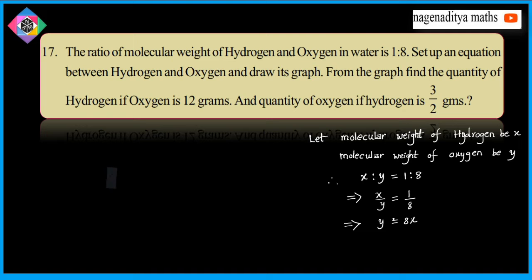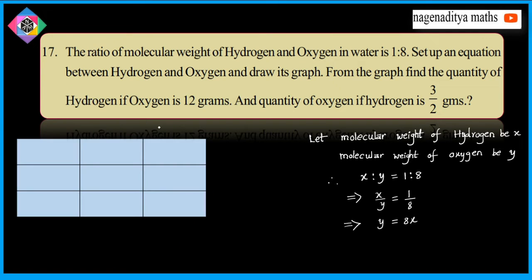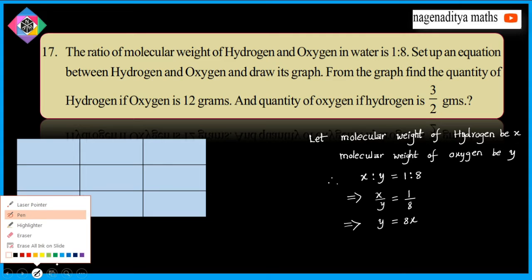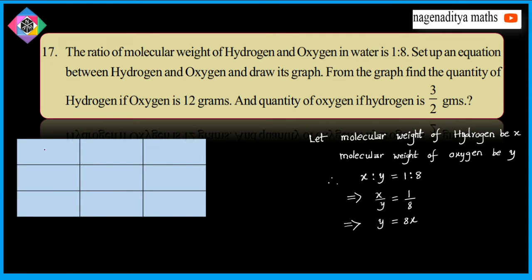To plot y is equal to 8x, we have to draw the following table. This is x, this is y, and this is x comma y. If x is equal to 1, then y is equal to 8 and the ordered pair is 1 comma 8. If x is equal to 2, y is equal to 16, so the ordered pair is 2 comma 16.